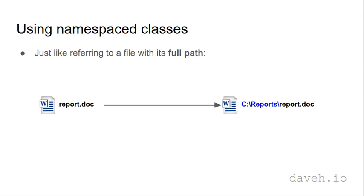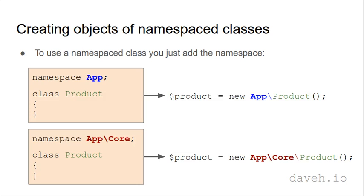So how do we use classes that are in namespaces? Well, just like you would refer to a file with its full path, to use a namespaced class you just add the namespace before the class name, like this.